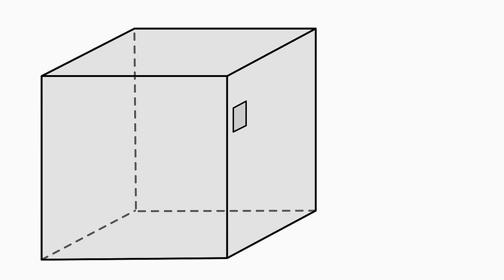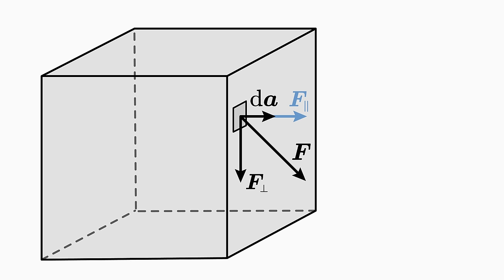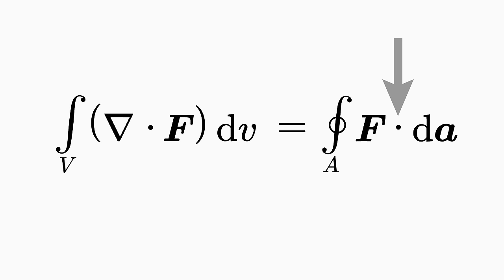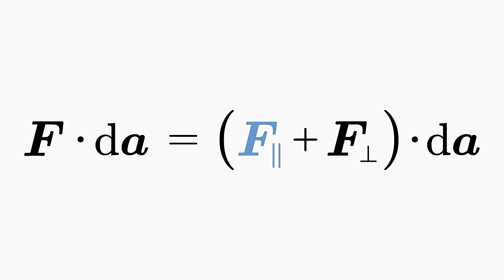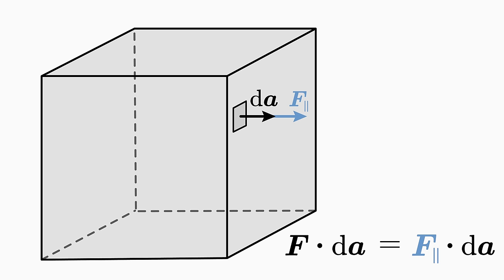To understand what this number means, you must first know that any vector can be written as the sum of two other vectors: one vector that is parallel to the dA element (let's call it F parallel), and another vector that is orthogonal to the dA element (let's call it F orthogonal). The scalar product of two orthogonal vectors always yields zero, which means that the scalar product between F orthogonal and the dA element is zero. However, the scalar product between F parallel and the dA element is generally not zero. So the scalar product on the right-hand side picks out the part of the vector field that is exactly parallel to the dA element, while the orthogonal part is eliminated.